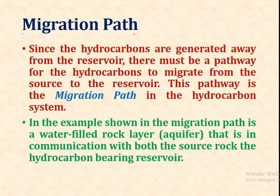The second requirement is the migration path. Since hydrocarbons are generated away from the reservoir, there must be a pathway for hydrocarbons to migrate from the source to the reservoir. This pathway is the migration path in the hydrocarbon system. In the example shown, the migration path is a water-bearing rock layer or aquifer that is in communication with both the source rock and the hydrocarbon-bearing reservoir.